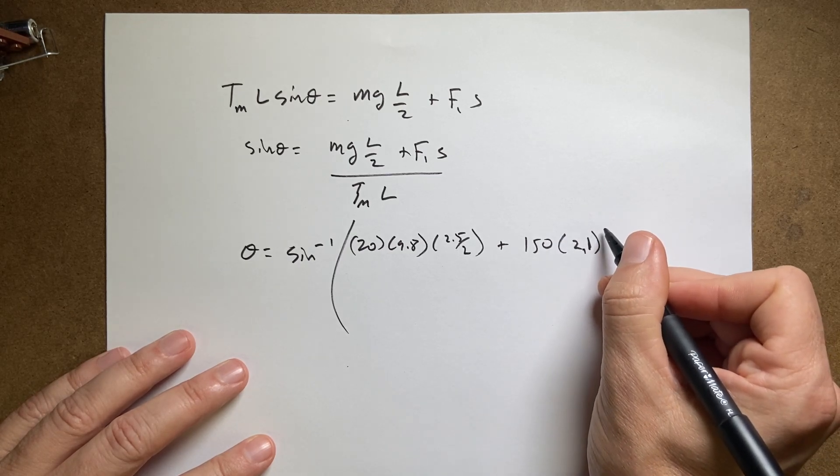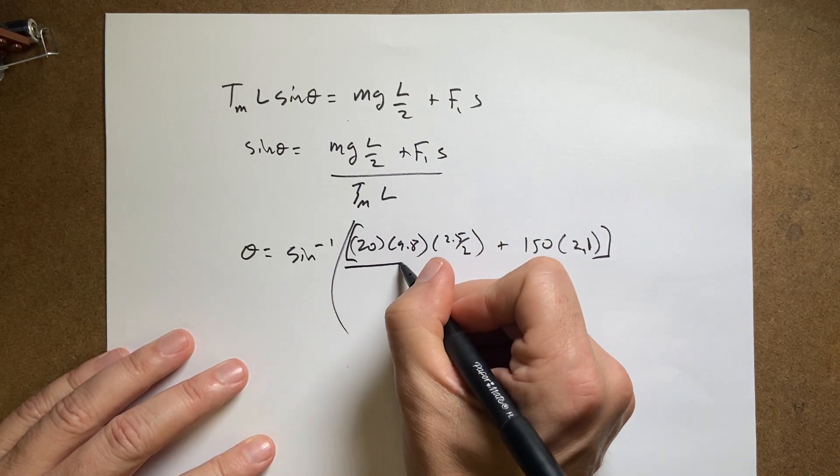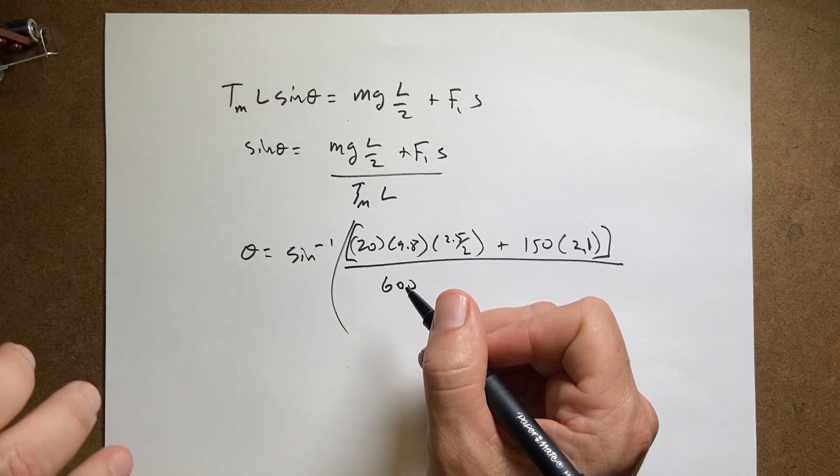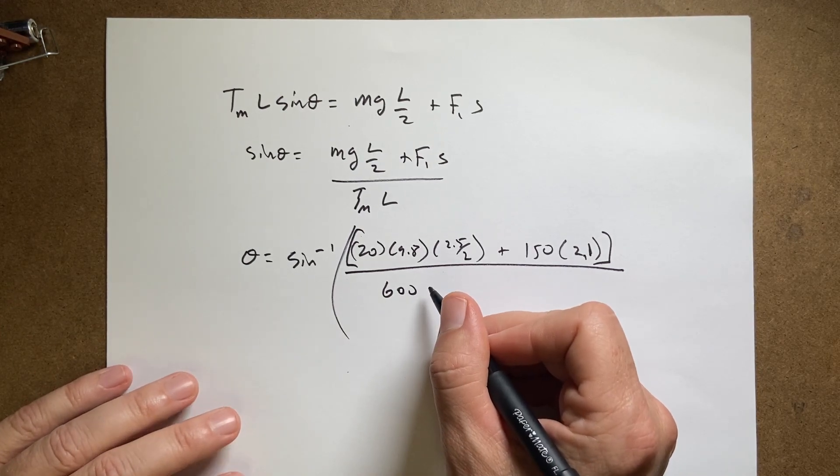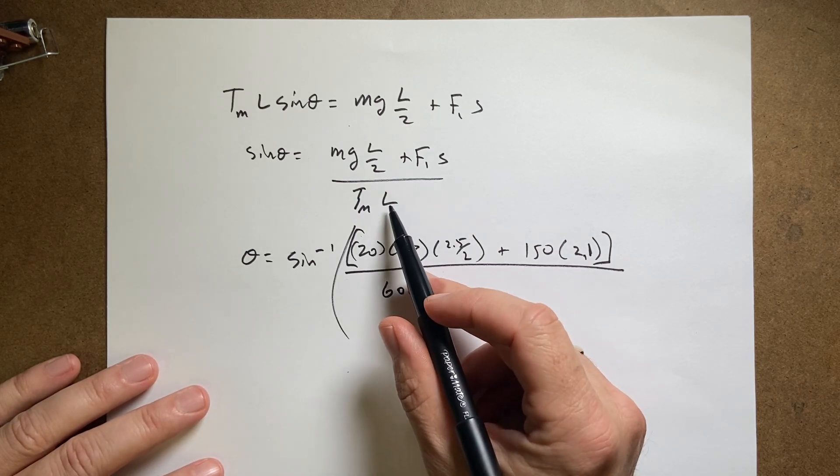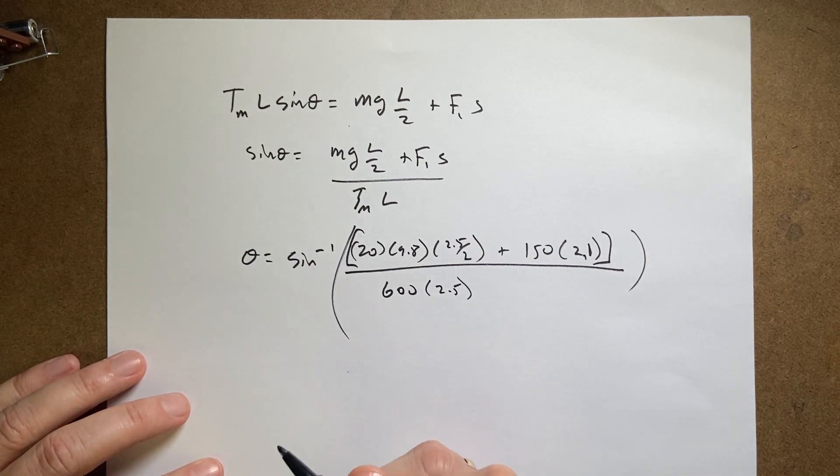So let's say mass of 20 kilograms times 9.8 times 2.5 over two plus 150 times 2.1. I've memorized all these numbers actually. And actually parentheses, parentheses, all of that over T max of 600 times L, which is 2.5. And then just plug that in and you get some angle.